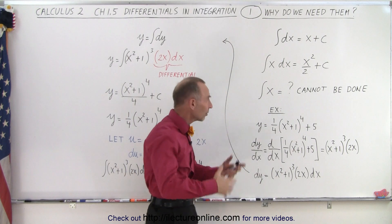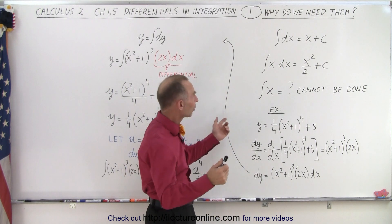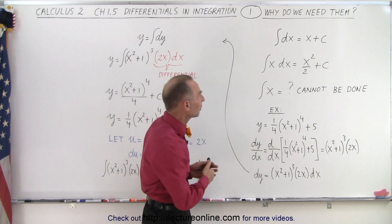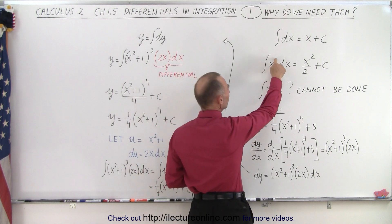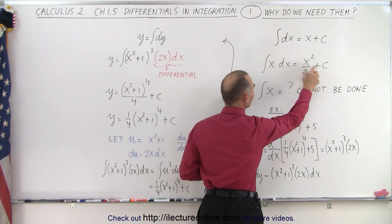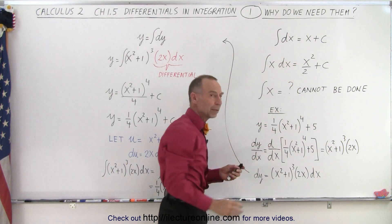We just kind of take it for granted, and okay, it's there, and where did it go? Well it just kind of disappeared, right? What we did was we add a one to the exponent, divide it by the new exponent, add a constant of integration, and somehow that dx just disappeared.